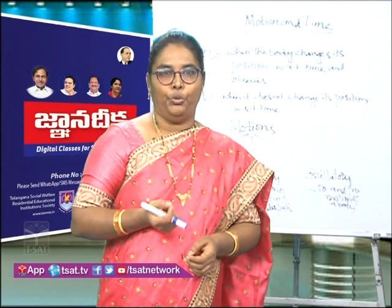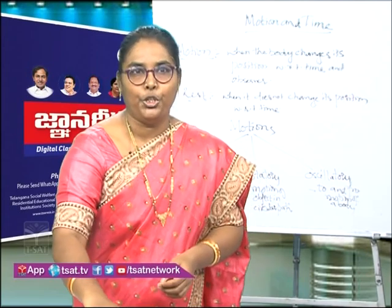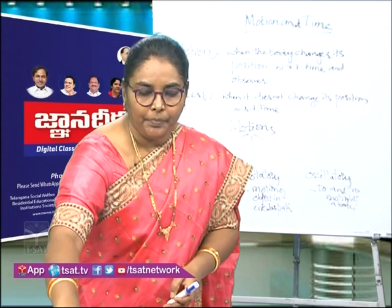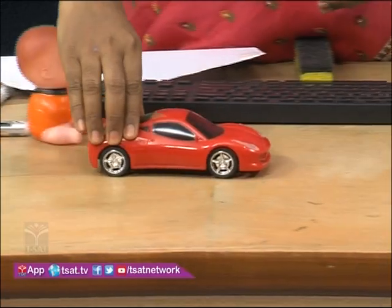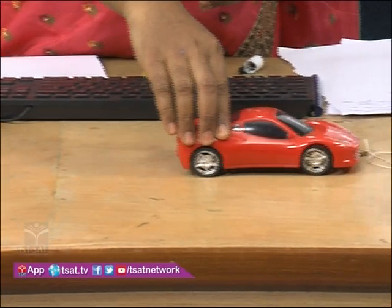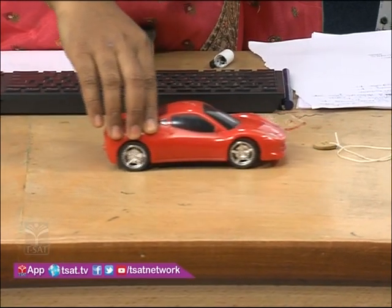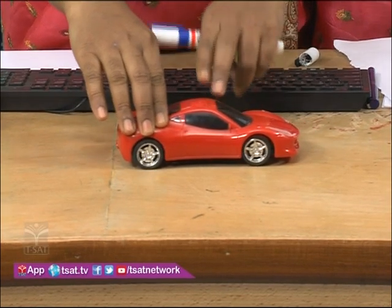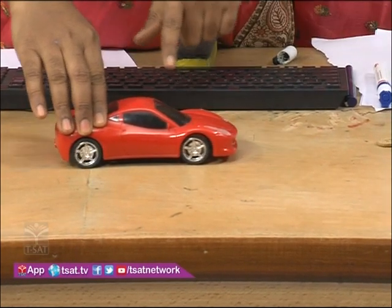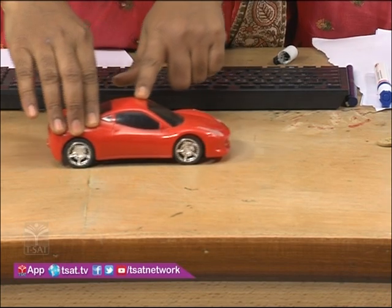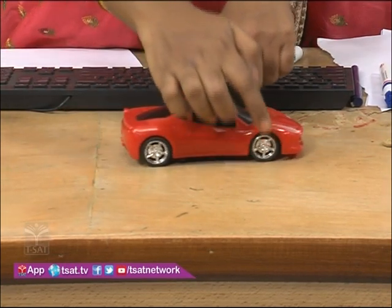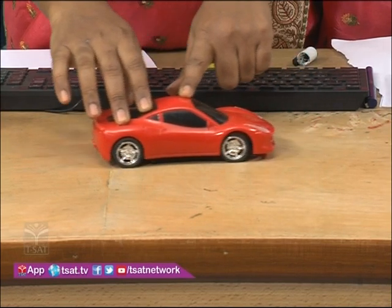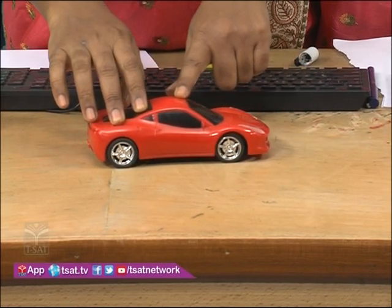Now let me show you the types of motion. Here a car is moving — this car is in translatory motion. Now children, you can see two types of motion here. One is translatory motion, and another is rotatory motion. The tires of the car are rotating, so two types of motion you can see.